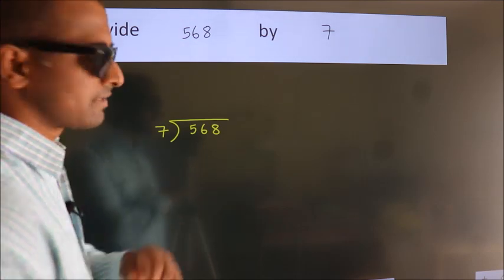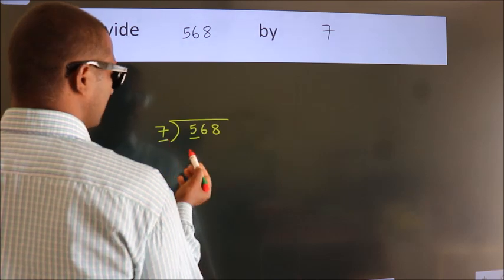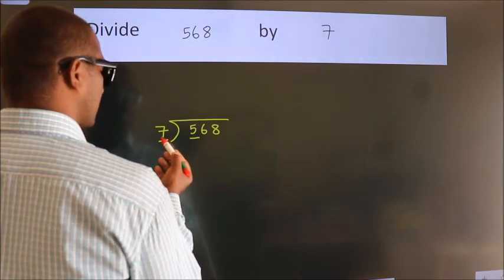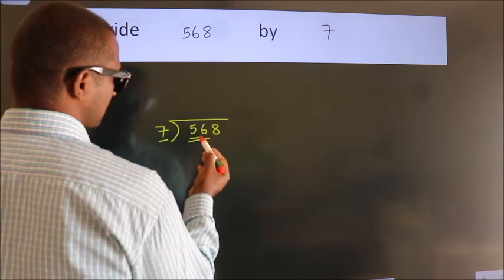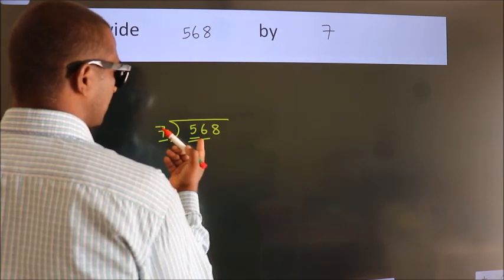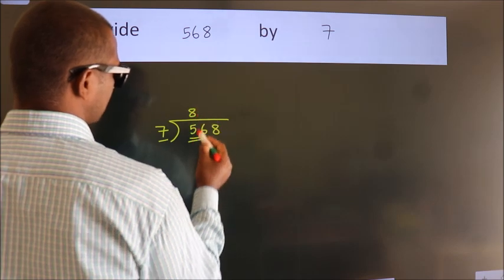Next. Here we have 5, here 7. 5 is smaller than 7, so we should take 2 numbers: 56. When do we get 56? In the 7 table. 7 eights is 56.